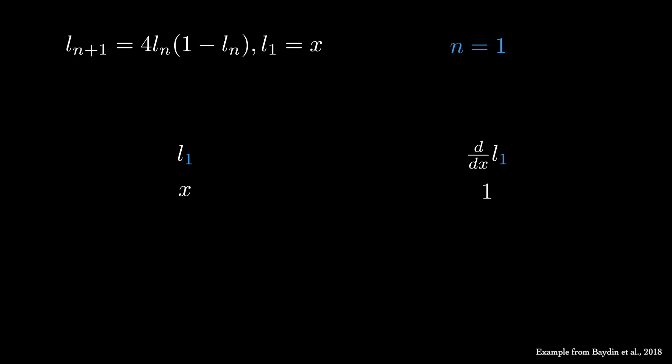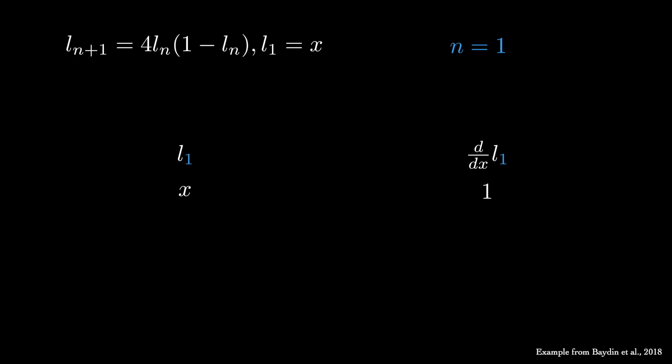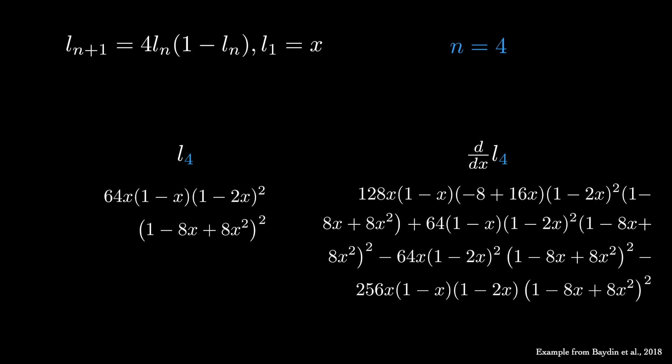For example, let's look at this recurrence relation known as the logistic map. For n equals 1 and 2, the derivative expression is about as simple as the original. But as we increase n further, the derivative quickly gets out of hand. Now, in this example, we can simplify the expression quite a bit to polynomial form, but this isn't always possible.